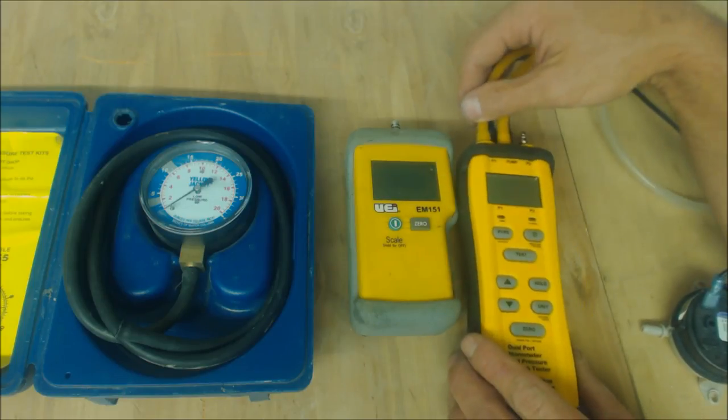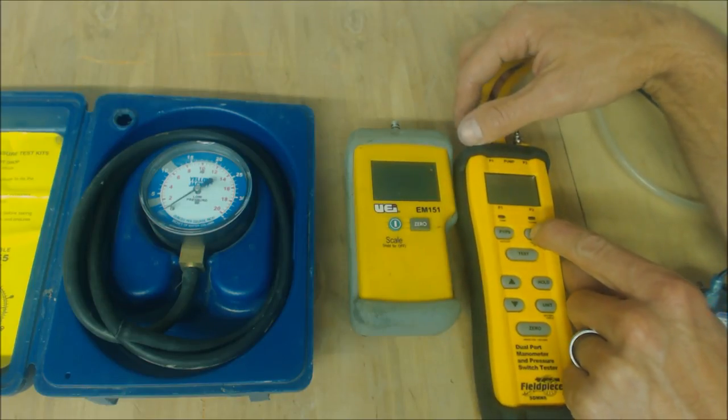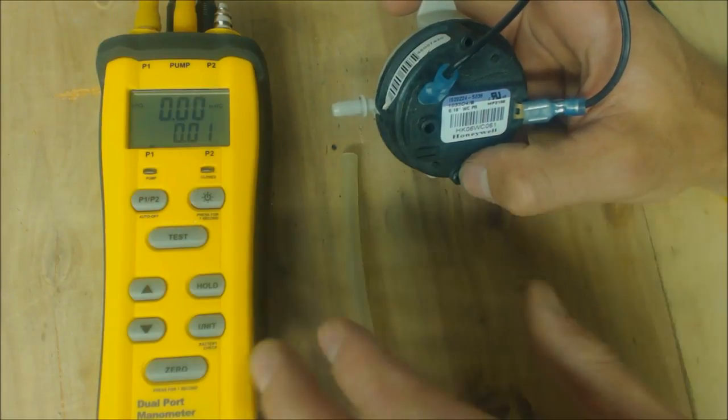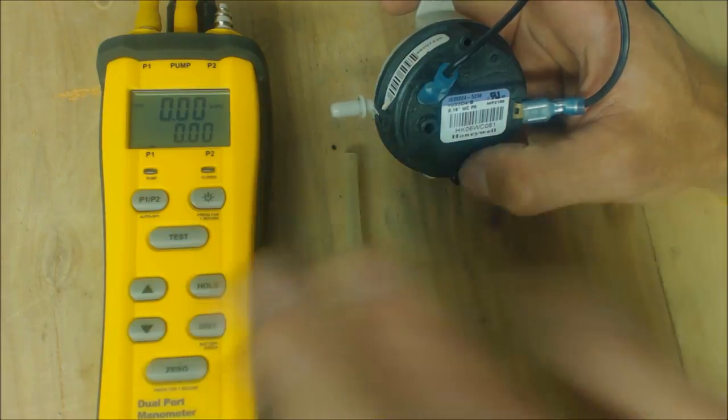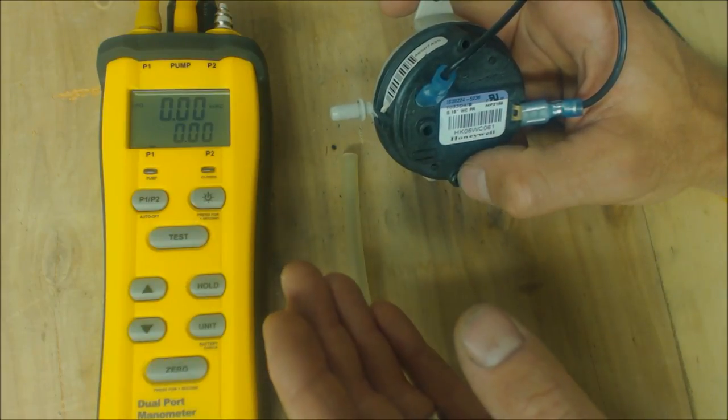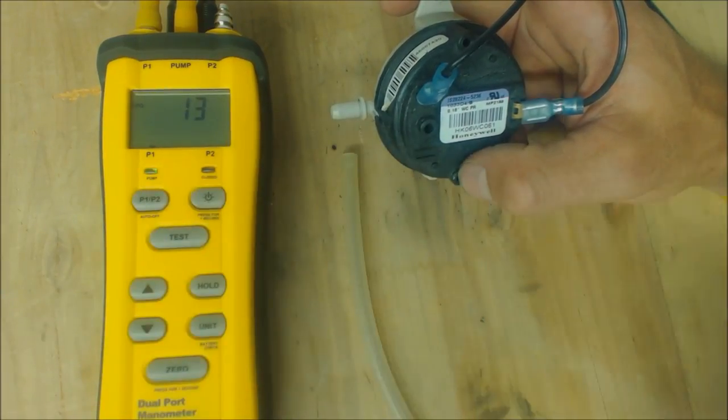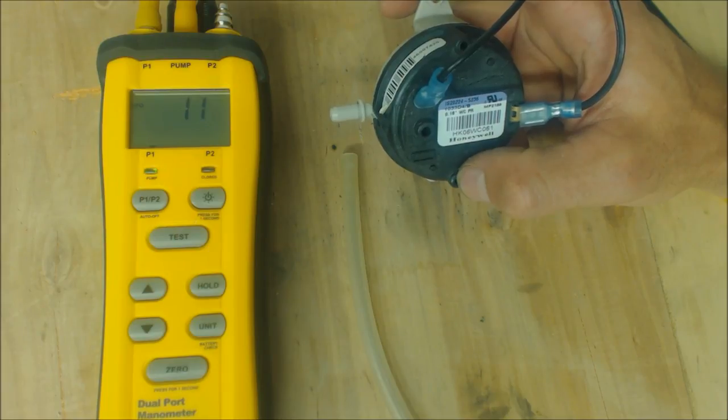We're going to turn this on. You want to make sure you zero it out by holding the zero button down for about one second. Next we're going to press the test button and that's going to start up the pump.